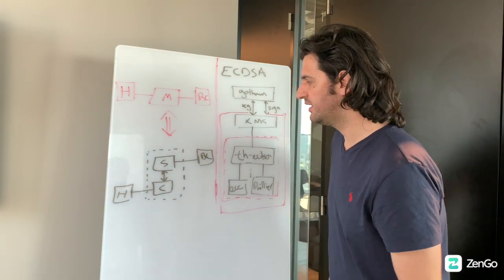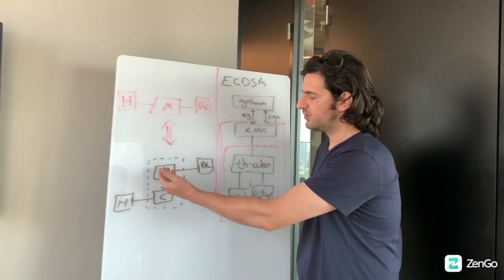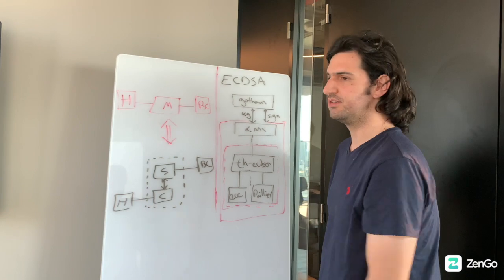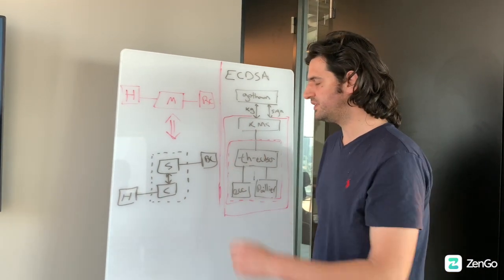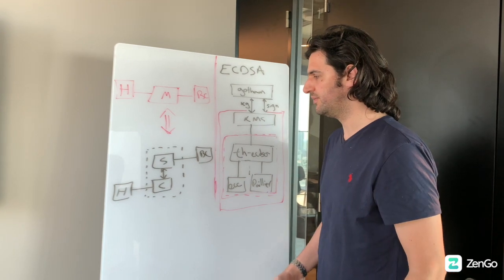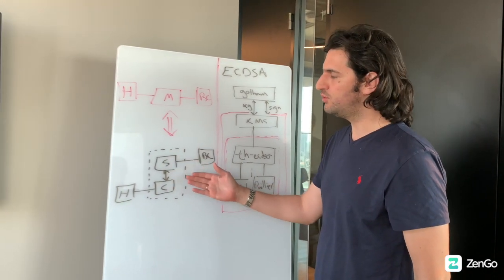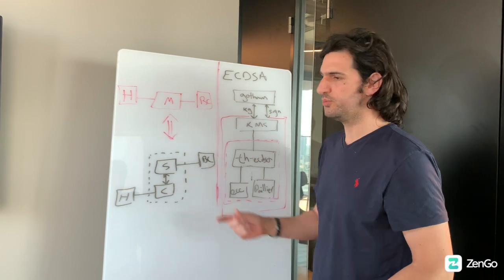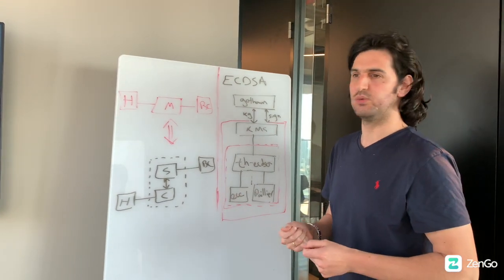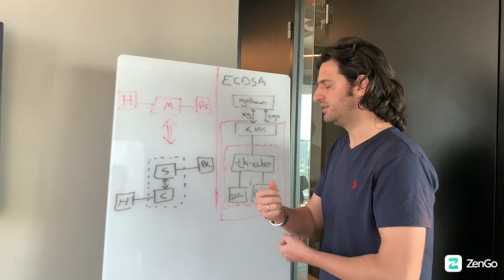Let's call them C and S. In our case, only C will be connected to the human and only S, the server, will be connected to the blockchain, for reasons that will make sense when we speak about the higher-level architecture. There are two functionalities that happen between those two parties, both in a distributed way: key generation and digital signature generation.